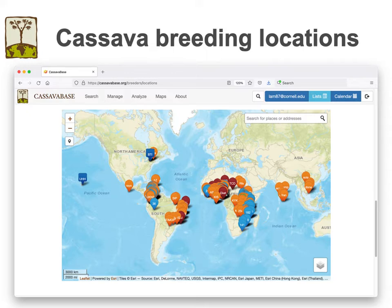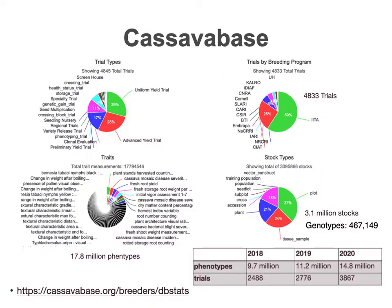The major driving force behind CassavaBase is of course the NextGen project. CassavaBase contains substantial amounts of breeding data, and some programs such as IITA and SEAD have uploaded historical data back to the 1970s. Currently, CassavaBase contains over 5,000 trials, 20 million phenotypic measurements, and almost 500,000 genotyping results.